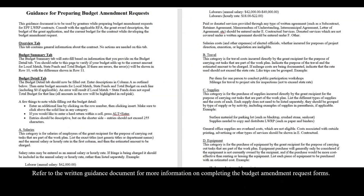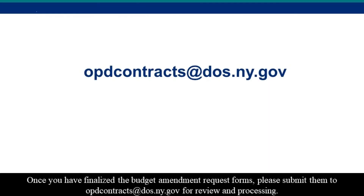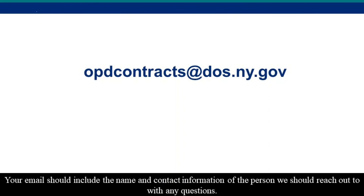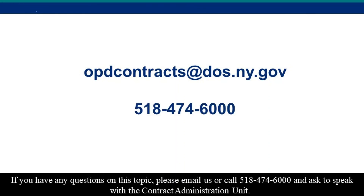Refer to our written guidance document for more information on completing the budget amendment request forms. Once you have finalized the budget amendment request forms, please submit them to opdcontracts at dos.ny.gov for review and processing. Your email should include the name and contact information of the person we should reach out to with any questions. If you have any questions on this topic, please email us or call 518-474-6000 and ask to speak with the contract administration unit.